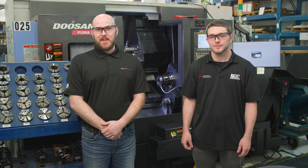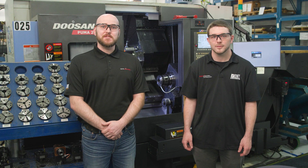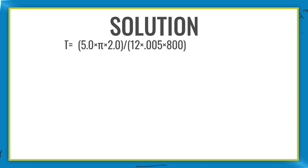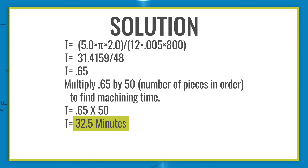When we determine the length of time this operation will take, we use our length of cut divided by the linear speed of the tool. Let's calculate the time in minutes it will take to machine the 5-inch long roller at the 2-inch diameter. We have now calculated that it should take 32 and a half minutes to complete this order of 50 parts.